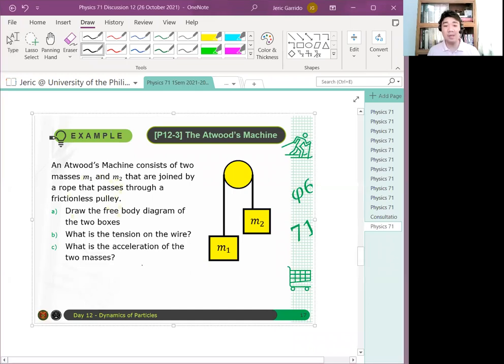So first, we draw a free body diagram, and then second, what is the tension on the wire, and third, what is the acceleration of the two masses? So I'll be giving you maybe a minute to solve this problem. Actually, I'll just explain it to you. But just think of how to approach this problem. And after that, I will solve the problem for you.